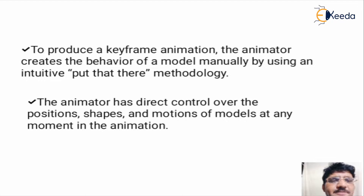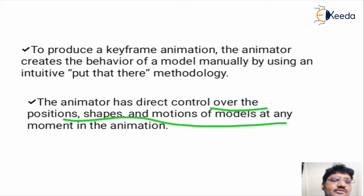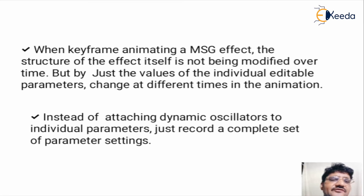To produce a keyframe animation, the animator creates the behavior of the model manually. The animator has direct control over the positions, shapes and motion of the model at any moment in the animation. In the keyframe animation method, when animating an effect, the structure of the effect itself is not being modified over time.